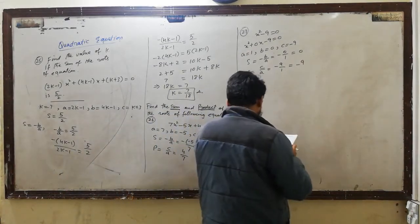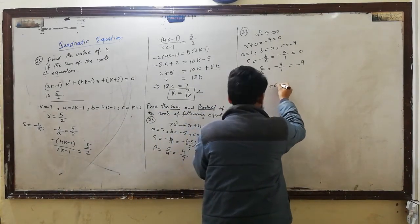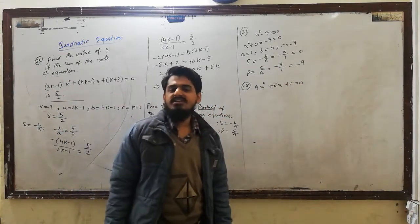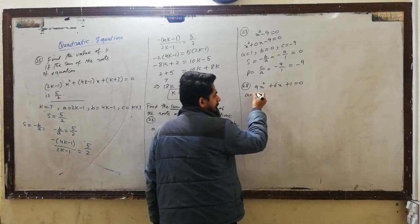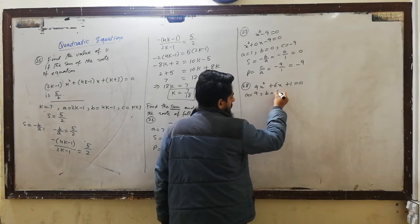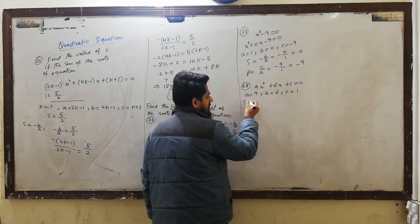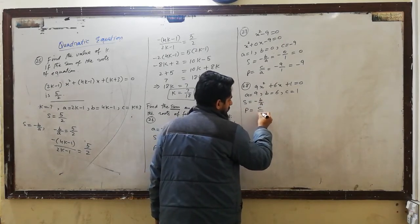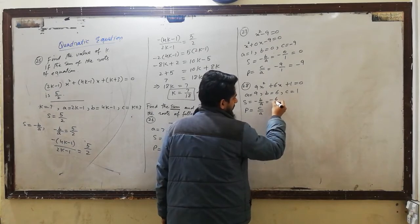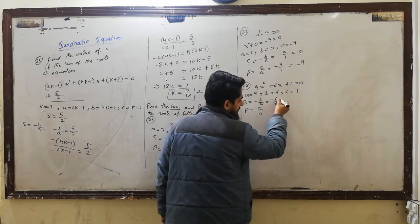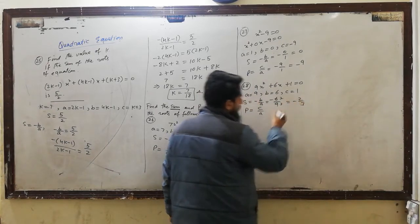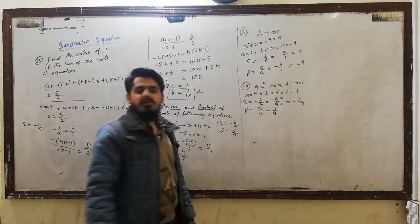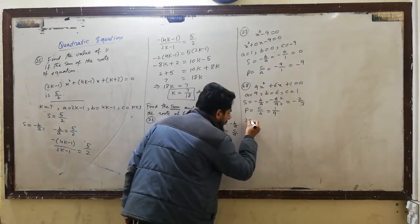Question number 28: 9x squared plus 6x plus 1 equal to 0. इसमें sum and product point out करने हैं। A is equal to 9, B is equal to 6, C is equal to 1. Sum = minus B over A = minus 6 divided by 9 = minus 2 divided by 3. Product = C over A = 1 over 9. यह हमारे sum and product के answers हैं।